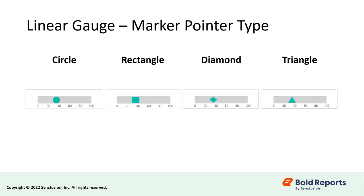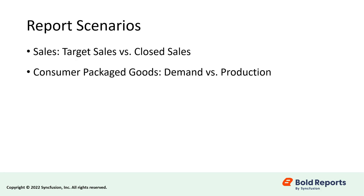The marker pointer has marker styles that include circle, rectangle, diamond, and triangle. Gauges can be used in a wide range of report scenarios. In sales, they are used to show target sales versus closed sales. In consumer packaged goods, they are used to show demand versus production.